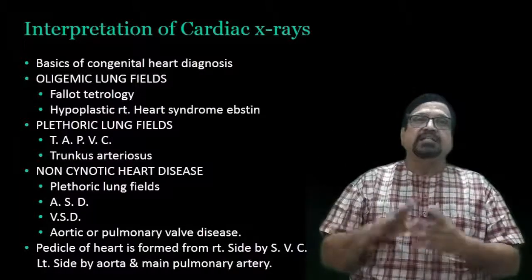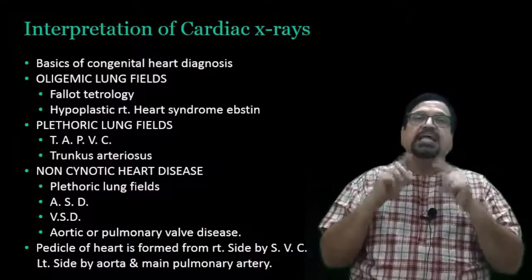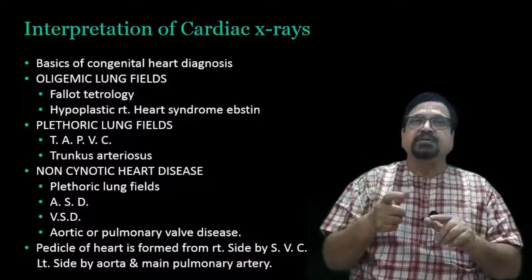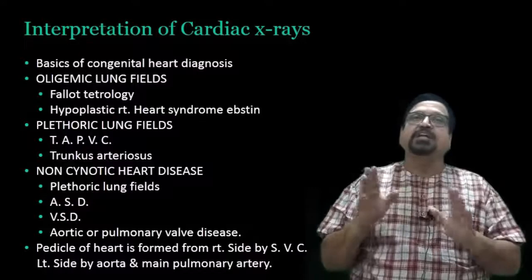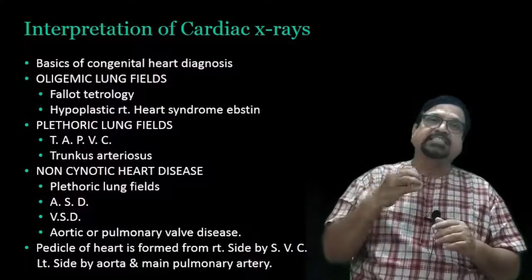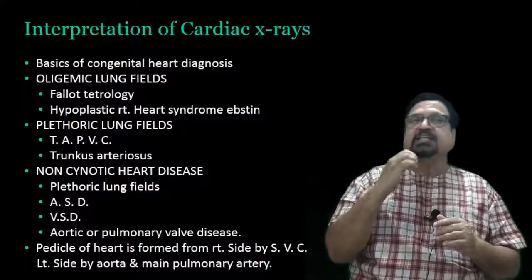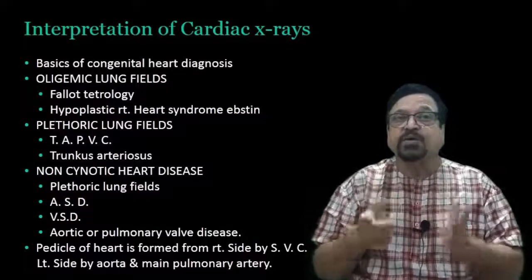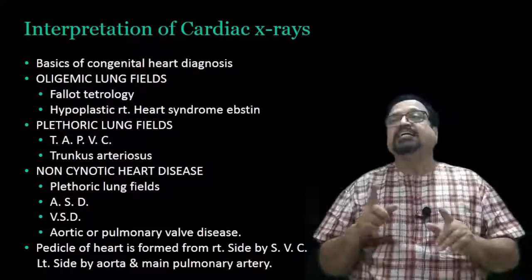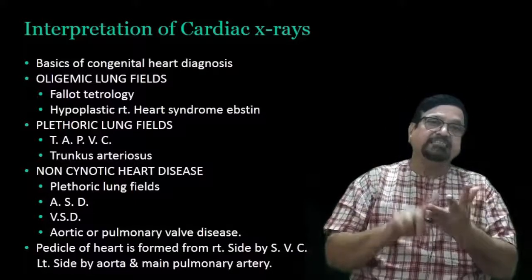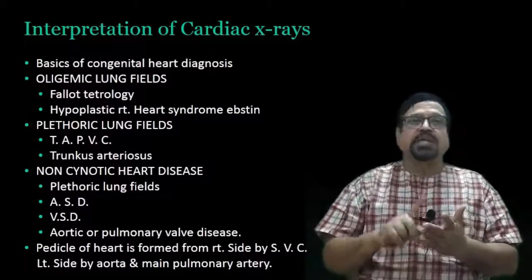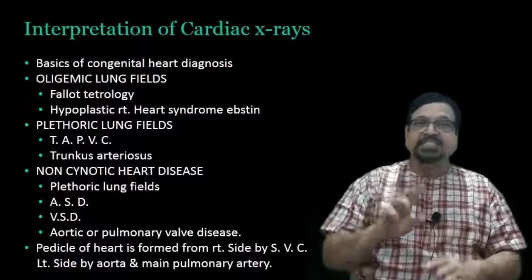Now let us come to plethoric lung fields. Total anomalous pulmonary venous connection - that will be a plethoric lung field. Then plethoric - truncus arteriosus will give a plethoric lung field. Then non-cyanotic heart disease - again you will get plethoric lungs. There are very few conditions: ASD, VSD, and pulmonary valve disease or aortic valve disease.